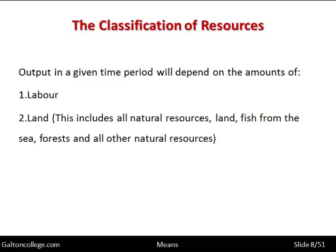Next we could have land. Land is all natural resources — not just land as we classically think of it. Land could be fish in the sea or forestry. All natural resources are classified as land.